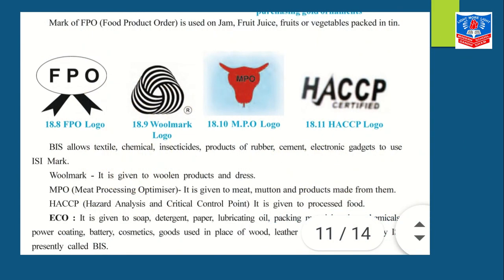The FPO mark — Food Product Order — is used on jam, fruits, juices, vegetables, and packed tinned items. For textile, chemical, insecticides, rubber products, cement, and electronic gadgets, the ISI mark is used to prove that the product is of good quality.